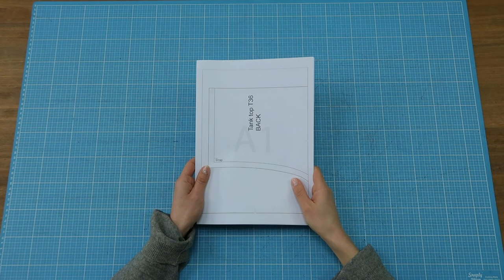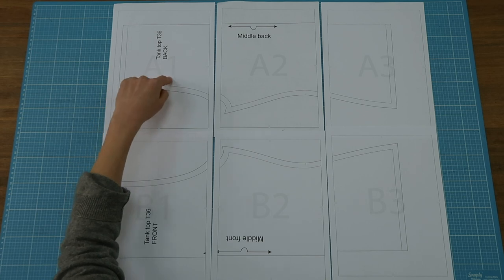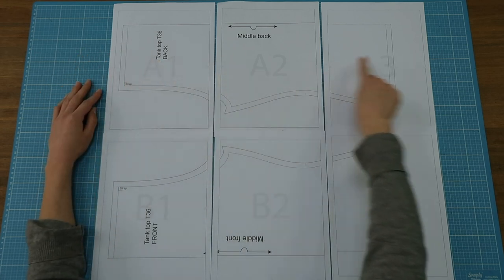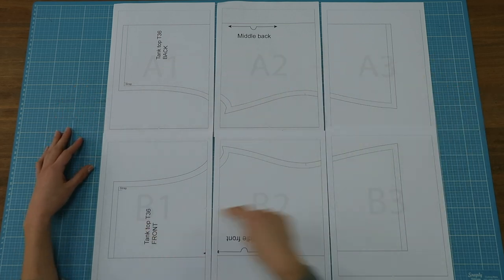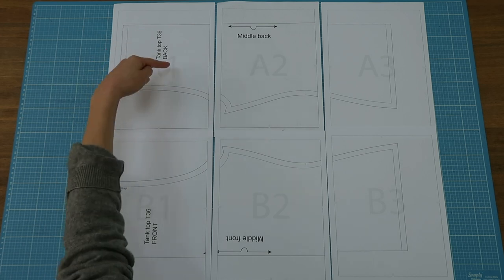I've printed my pattern on A4 pages. Each page has a letter and a number. The letters indicate the order for the lines, so the first line is all A's, the second B's, and there could have been C's and D's and so on. The columns are all numbers, so the first column is all ones, then we have twos, threes, and so on.